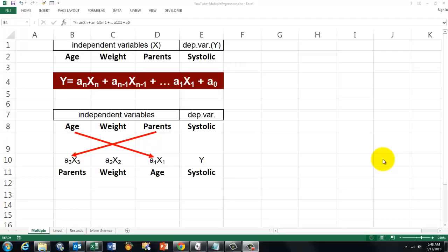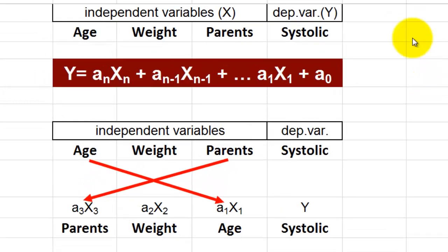Let's tackle the following multiple regression problem. Say we have four variables. One is the dependent variable, systolic blood pressure, and we assume that it depends on three independent variables: the age of the person, the weight, and did the parents have a high systolic blood pressure? Zero is neither one, one is one parent, two is two parents.